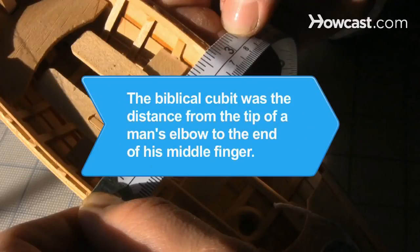Did you know? The biblical cubit was the length of a man's forearm, or the distance from the tip of the elbow to the end of his middle finger.